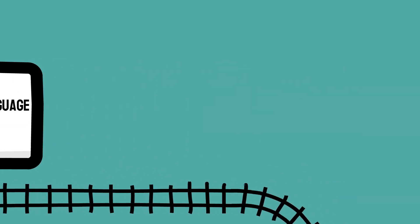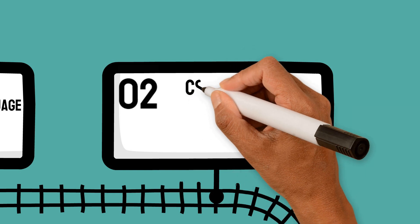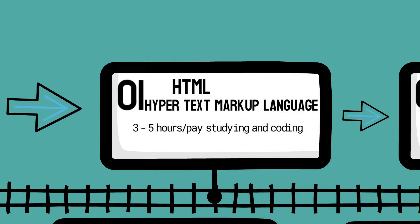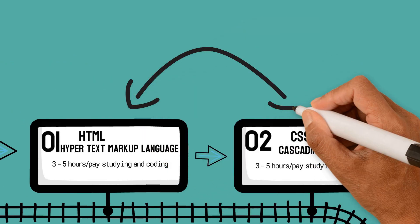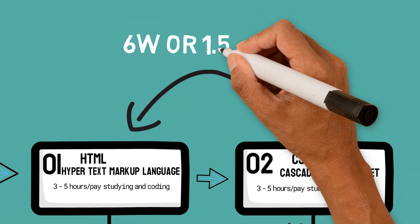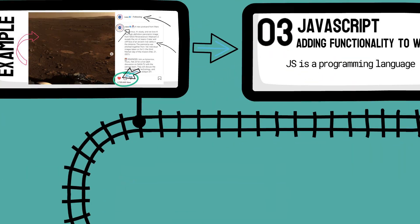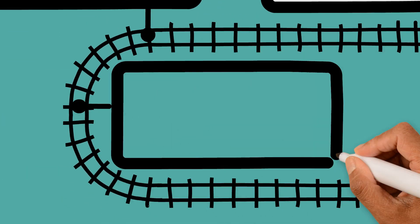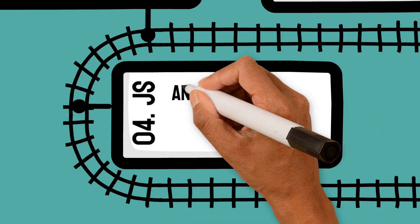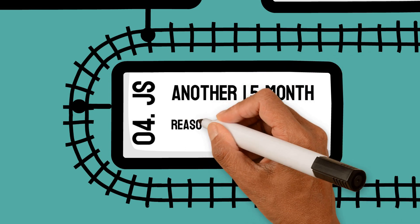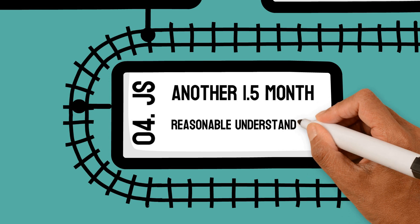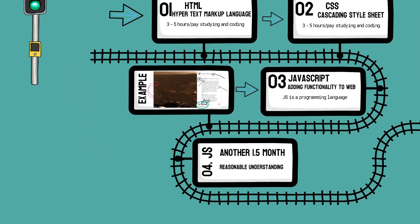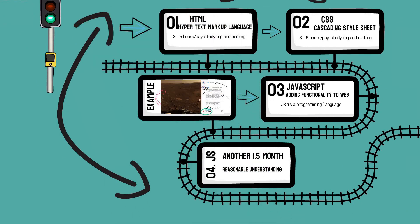Your front-end development journey starts with HTML and CSS. If you spend 3 to 5 hours a day studying and coding, you should have a reasonable understanding of these two languages in about a month to a month and a half. Once you learn those, you need to learn JavaScript — learning JavaScript will probably take another 6 weeks. Of course, you won't be a JavaScript expert in just 6 weeks, but you'll have a reasonable understanding and will learn more as you work on different projects.